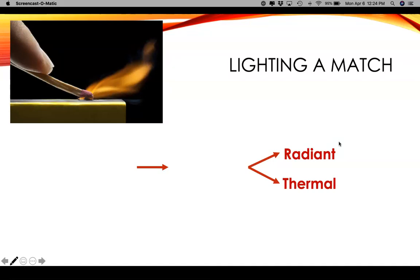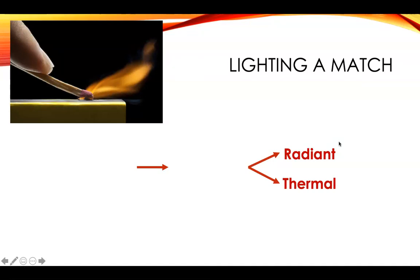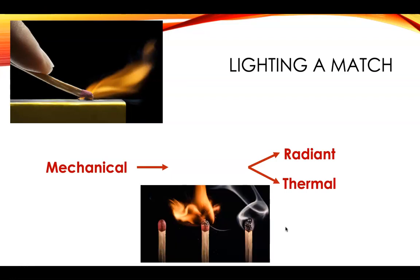So lighting a match, we've already gone over the example that a match produces radiant and thermal energy. So what are the steps that come before that? Well, you have to actually strike the match against that sandpaper-like material. So that's mechanical energy. And the tip of the match starts out red, and after the fire is done and it's gone out, it's black. You may recall that a change in color is a clue to chemical change, a chemical reaction. So that's that middle piece connecting them.